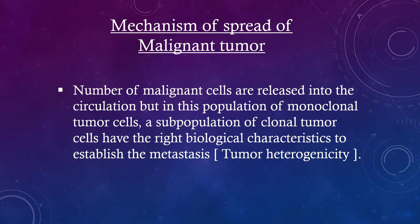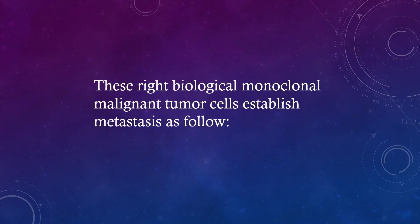Mechanism of spread of malignant tumor: a large number of malignant cells are released into the circulation, but within this population of monoclonal tumor cells, a subpopulation of clonal tumor cells has the right biological characteristics to establish metastasis — this is called tumor heterogenicity. These biologically capable monoclonal malignant tumor cells establish metastasis as follows.